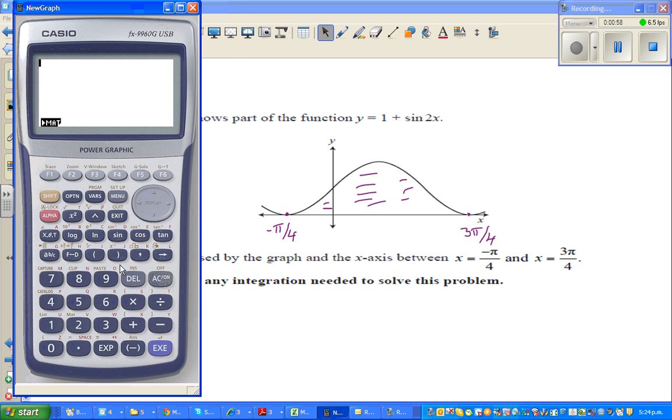So let me show you. So if you go to option and if you go to f4 calculus and if you again go f4 that is integration. So the function is 1 plus sin 2x comma your lower bound is minus shift pi by 4 comma 3 pi by 4. So 3 comma 3 comma 3 pi by 4. Close.